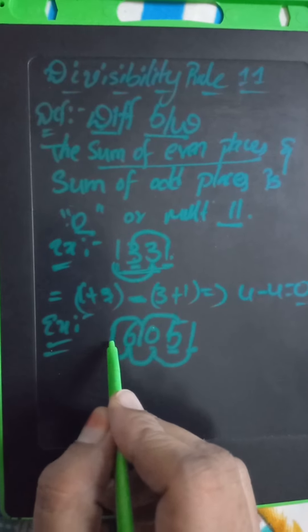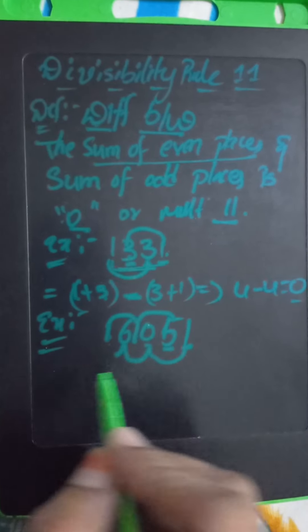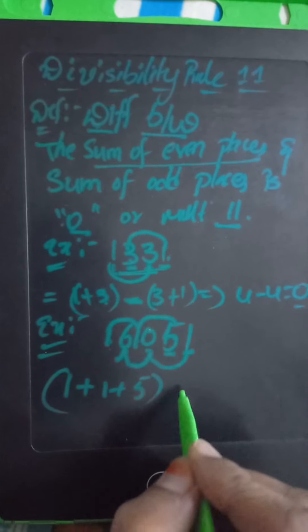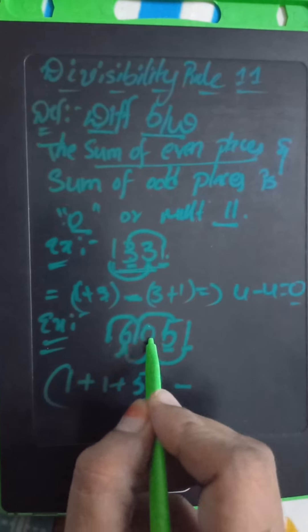So sum of even places means 1 plus 1 plus 1 plus 5, minus 6 plus 0 plus 1.